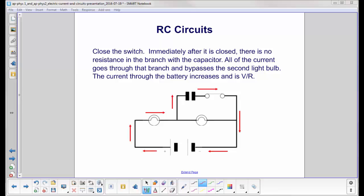Now close the switch. Immediately after it is closed, there is no resistance in the branch with the capacitor. Remember, we don't have any charges on the capacitor yet, so there's no potential here opposing the flow of current. This looks like something called a short circuit. There's no resistance there at all. So the current flow is now through this light bulb, comes up this branch and down here.